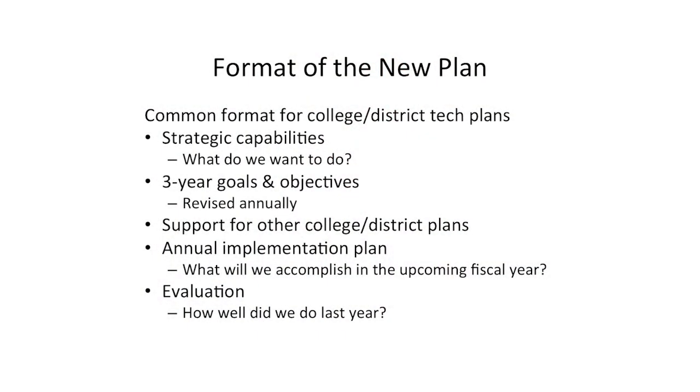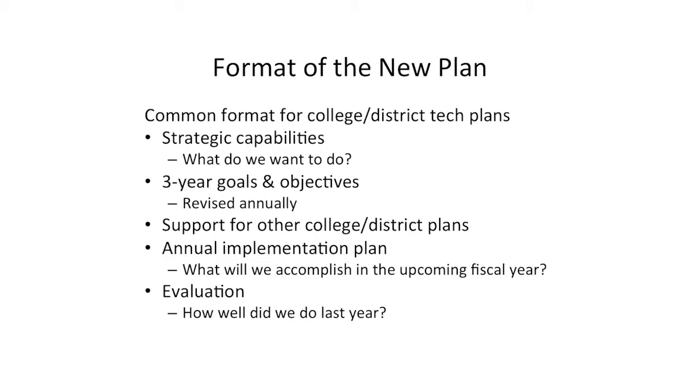The other thing we would do in our technology plans is create an annual implementation plan — what specifically are we going to do next fiscal year to achieve the goals and objectives in support of the strategic capabilities? What are we going to fund, what are we going to staff, what's the priority? And then we want to be able to go back and say how did we do: last year we had an implementation plan, we said we were going to do this and it would cost this much and be done by this date — did we hit the mark, did we achieve those goals and objectives, or did we miss, and why? Making that assessment part of the product as well.